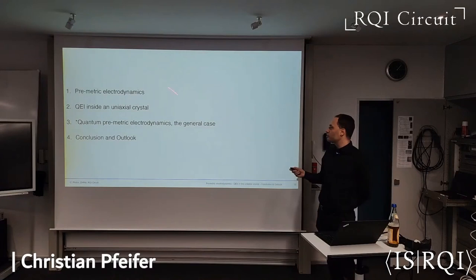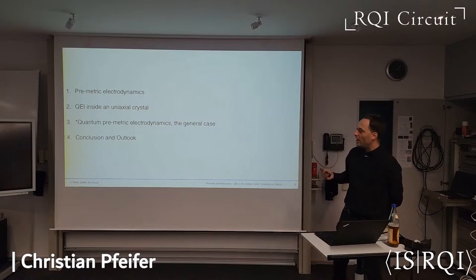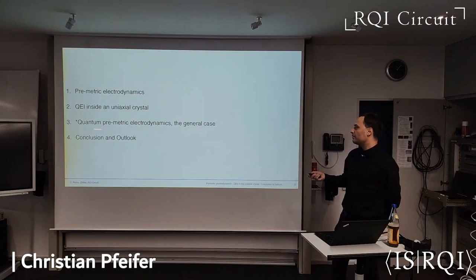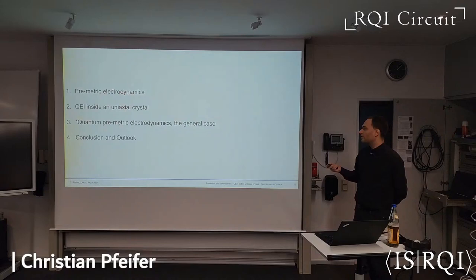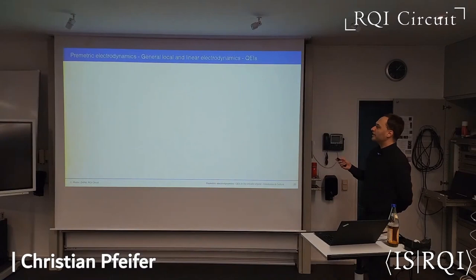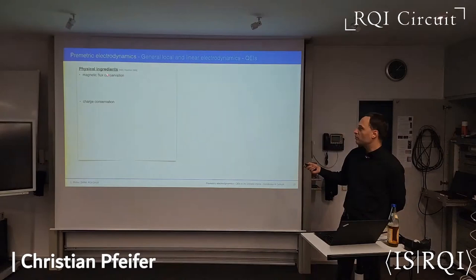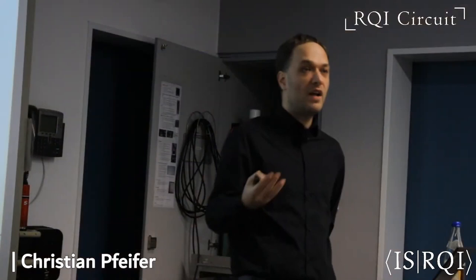I will quickly introduce what is pre-metric electrodynamics. A theory of electrodynamics has two important physical ingredients: magnetic flux conservation and charge conservation. Mathematically, to encode flux conservation we need a closed two-form, which we can integrate over surfaces, so that the flux flowing into a surface equals what flows out. And for charge conservation we need a closed three-form — a current three-form which is closed — arising from an induction two-form H, so that dH is a three-form.